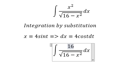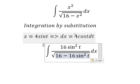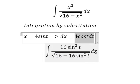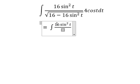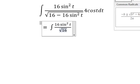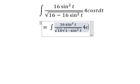So this is 16 sine squared t. This one changes too. For dx we change to 4 cosine t dt. Now we pull the square root 16 outside. And we got 1 minus sine squared t and we have 4 cosine t dt.